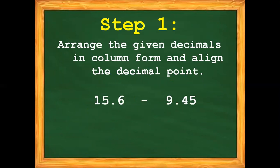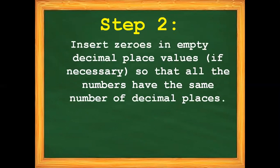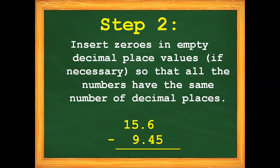Let's change this into column form. There you have it. Step number 2: insert zeros in empty decimal place values if necessary so that all the numbers have the same number of decimal places. In this case, we need to add 0 to our minuend.